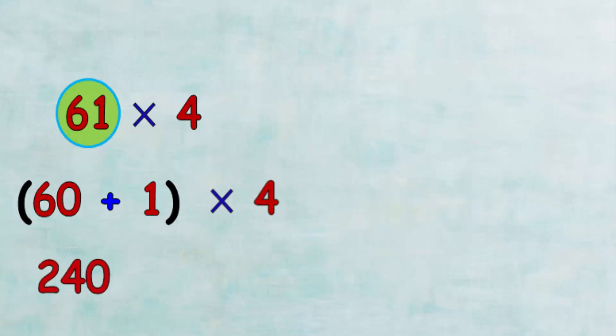And multiply 4 by 1, which equals 4. Then the sum of 240 and 4 is 244.